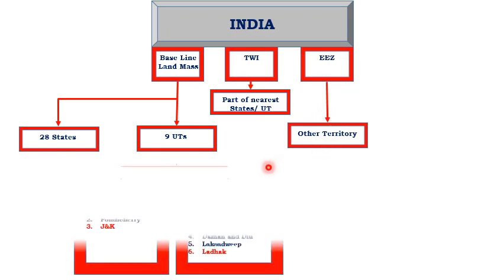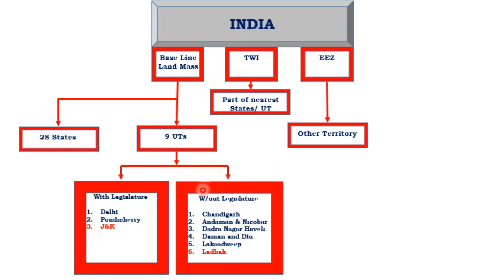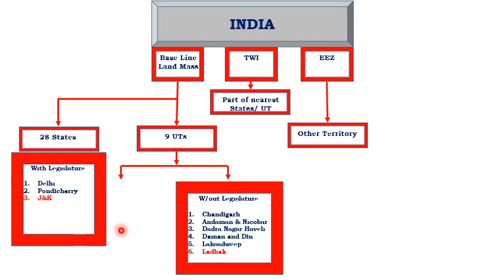Now have a look at the existing 9 UTs. Among the 9 UTs, 3 UTs have their own assemblies, and the remaining 6 UTs are governed by the Central Government. We have already discussed that the EEZ shall be deemed 'other territory,' and other territory shall be considered a separate UT.